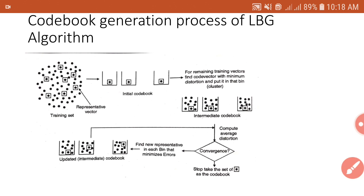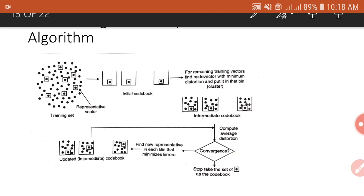Next, compute the average distortion for the training vectors — find the distortion between each training vector and its code vector, then take the average of all those distortions. After computing distortion, find the centroid of the training vectors in each cluster and make this centroid the new code vector for that cluster. The centroid is computed by taking the mean of all the training vectors in that particular cluster. Repeat this process until the code vectors stop changing.